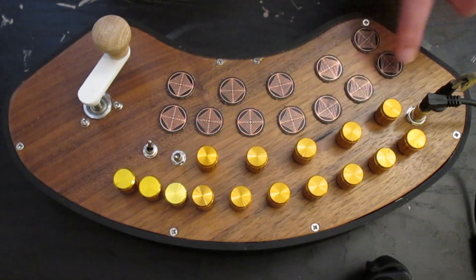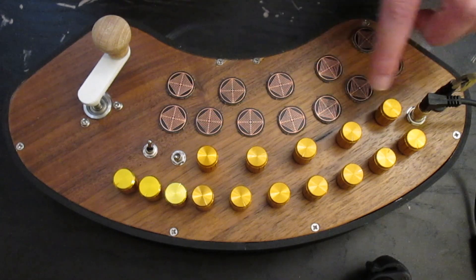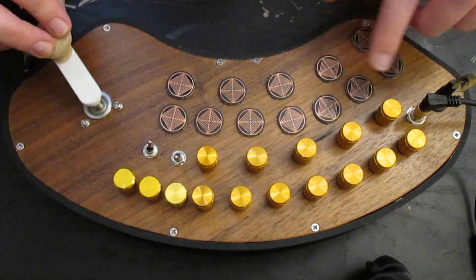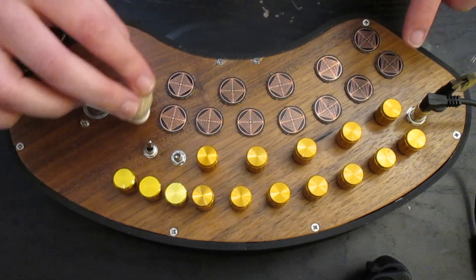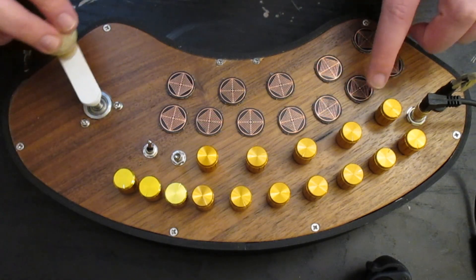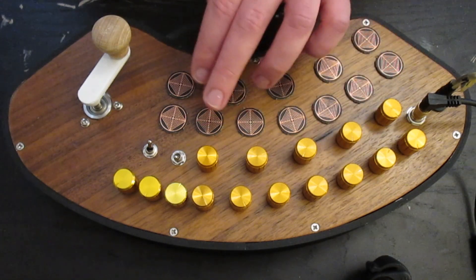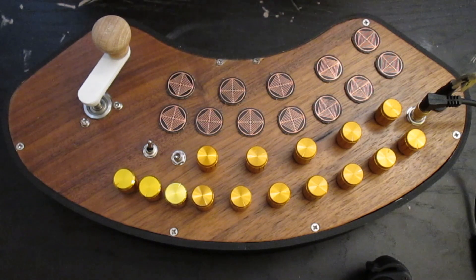And so these three touch plates are set up as drone strings. So that is a toggle function. And then all the other nine are momentary strings so they're only active while you're touching them.